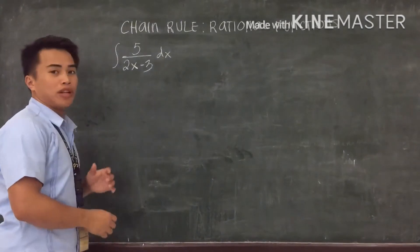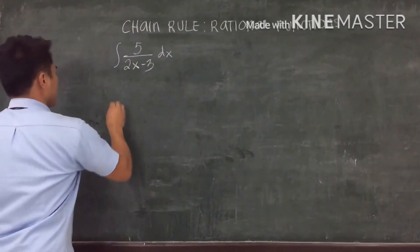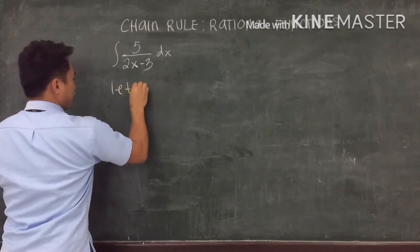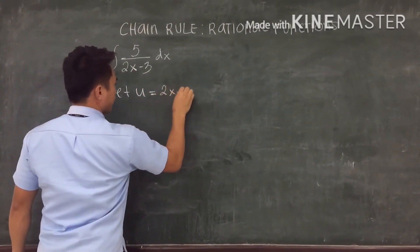In this function we need to review the integral of 5 over 2x minus 3. So we let u equal 2x minus 3.